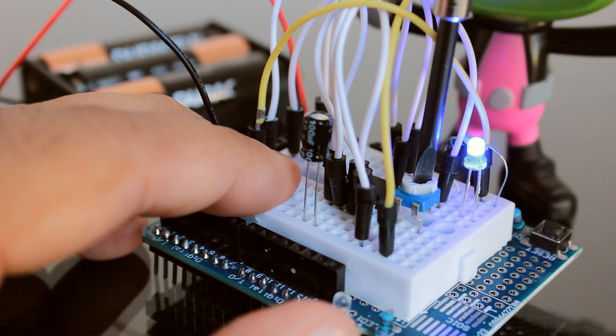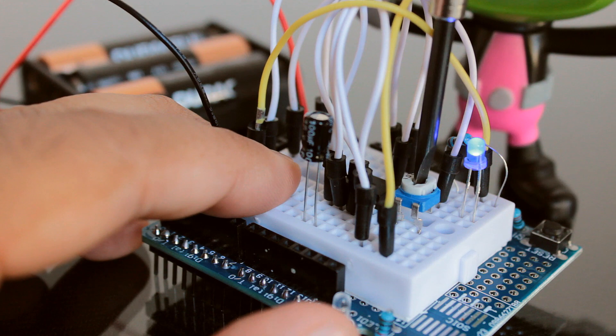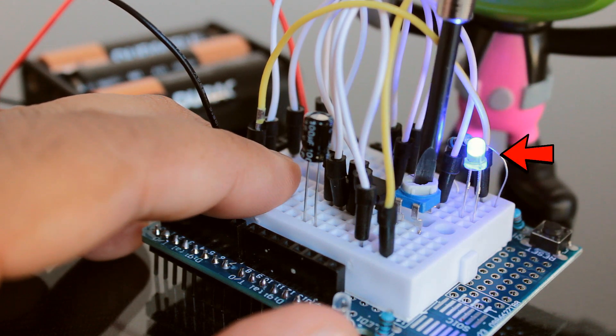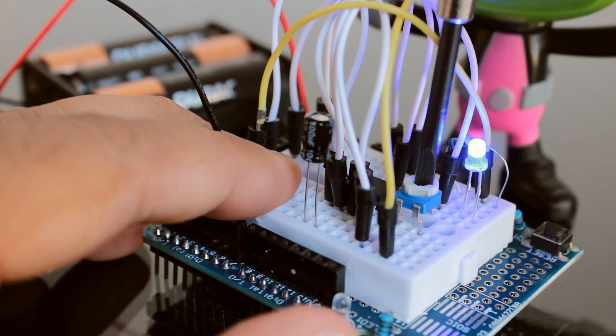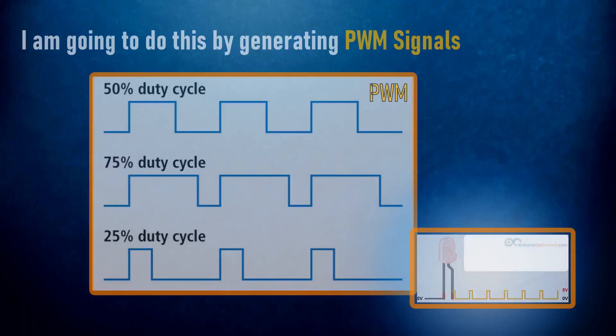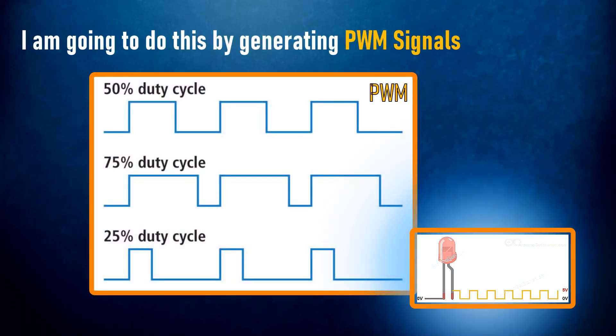Now if you want to get the same dimming effect but want to manually control the intensity, you will have to find a way to modulate the pulse sent to the LEDs or group of LEDs using a potentiometer. I am going to do this by generating a PWM signal.